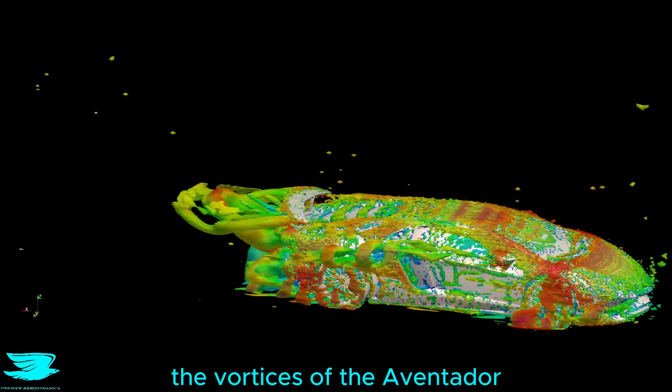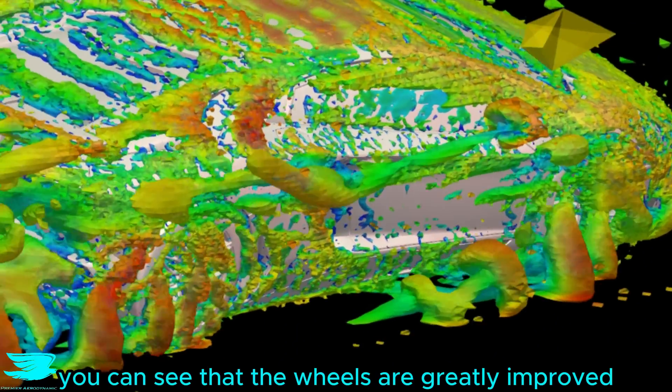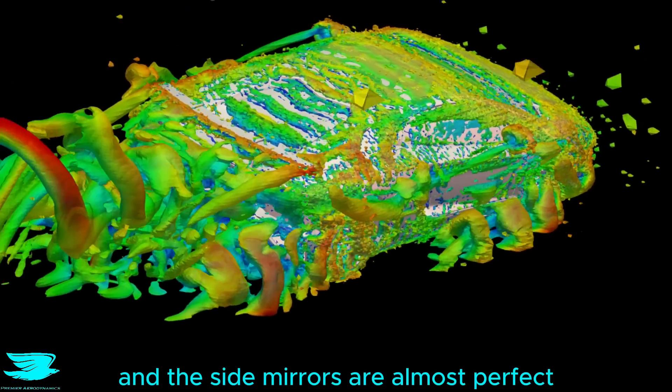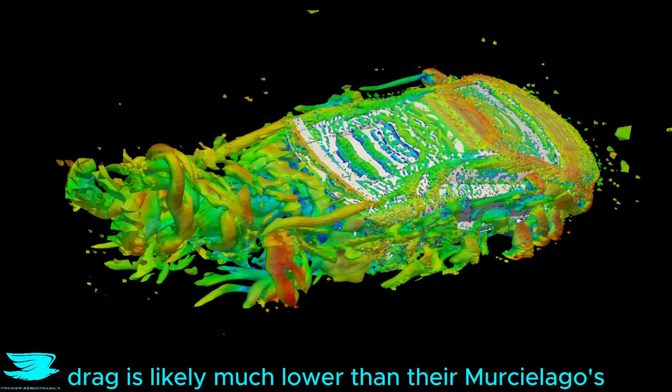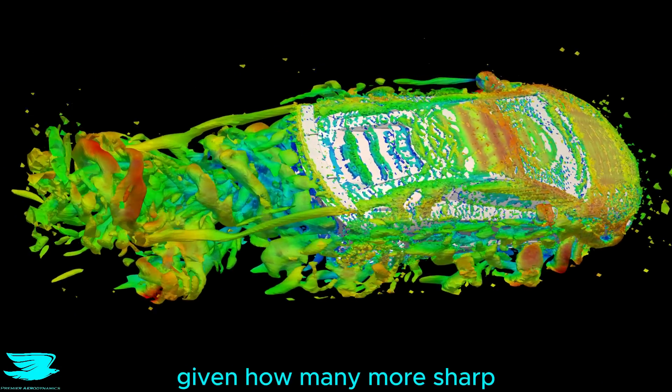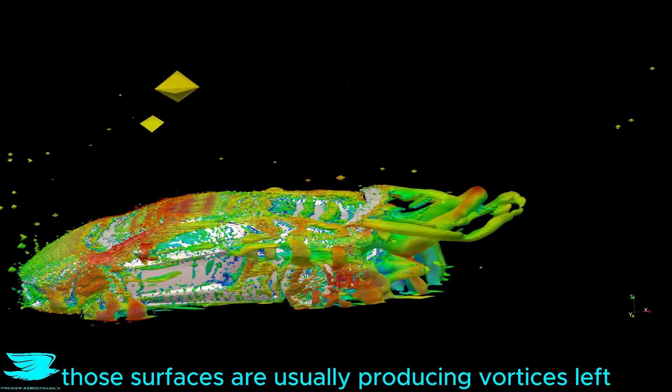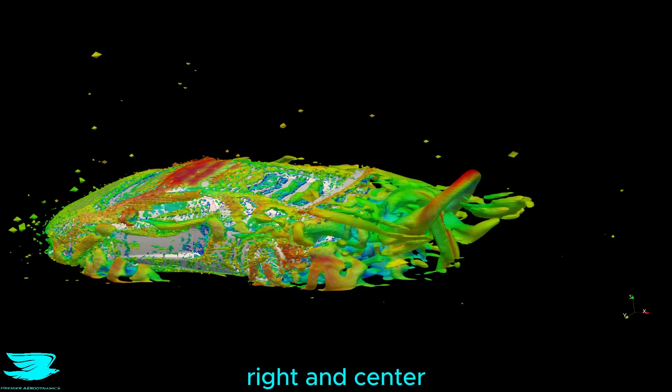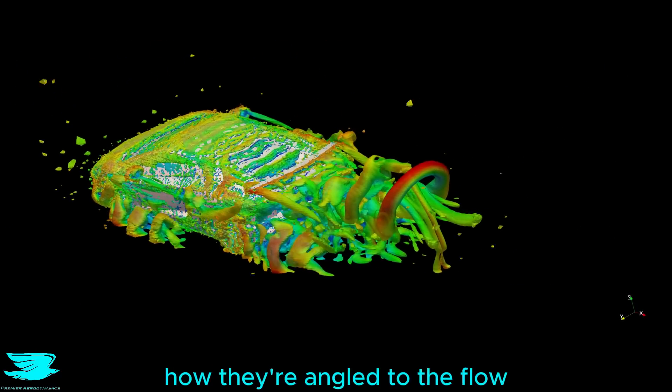The vortices of the Aventador are way better than the Murciélago too. You can see that the wheels are greatly improved and the side mirrors are almost perfect. The wake is much better too. So the Aventador's vortex drag is likely much lower than the Murciélago's, which is very surprising given how many more sharp angled surfaces the Aventador has. Those surfaces are usually producing vortices left, right and center, but they don't do so much here, and that has more to do with how they are angled to the flow.